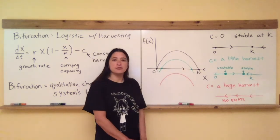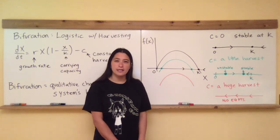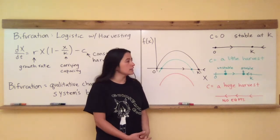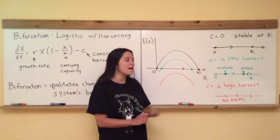So the black line represents no harvesting at all. That's just our classical logistic model. And now let's consider a case where we're just going to take a little, we're just going to harvest a little harvest.